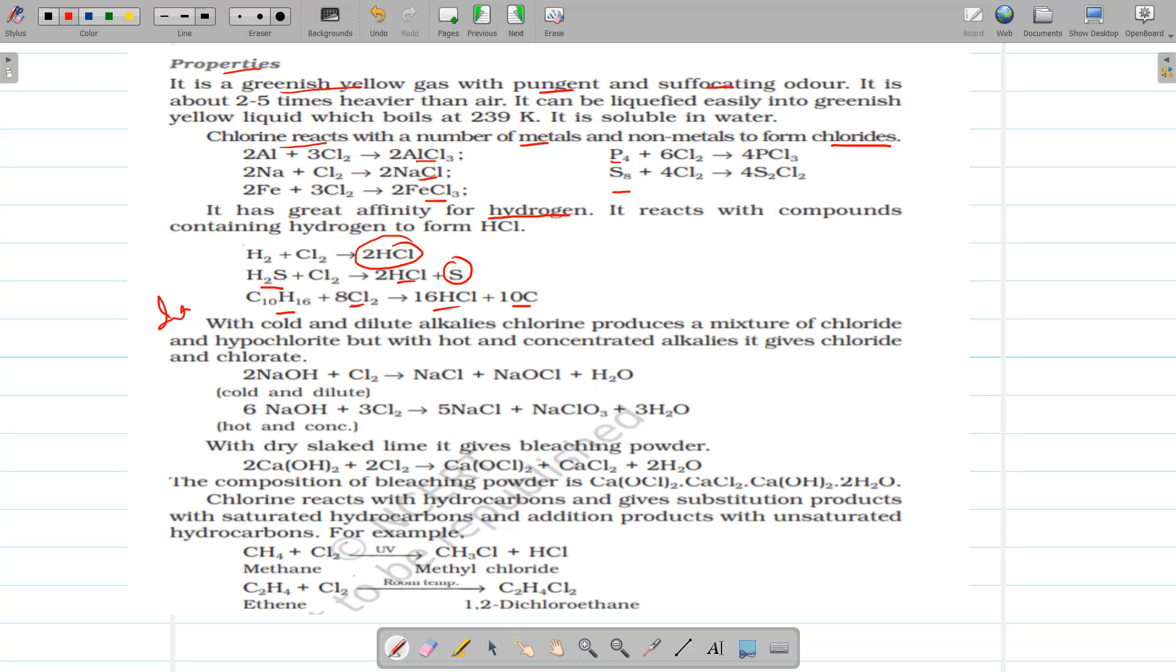Now, this is very important reaction. That is, reaction with sodium hydroxide. Cold and dilute, hot and concentrated. So when it reacts with the cold and dilute, there is formation of corresponding chloride and hypochlorite. And if it is reacting with hot and concentrated alkali, there is formation of chloride and chlorate. For example, if it reacts with cold and dilute sodium hydroxide, there is formation of sodium chloride and NaOCl, sodium hypochlorite.